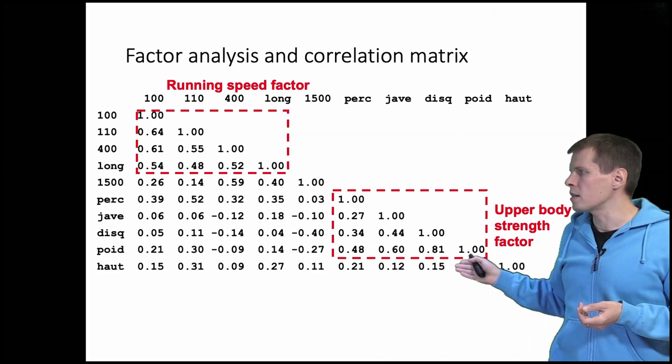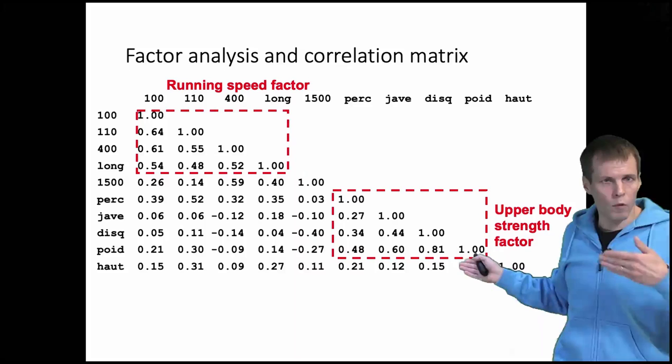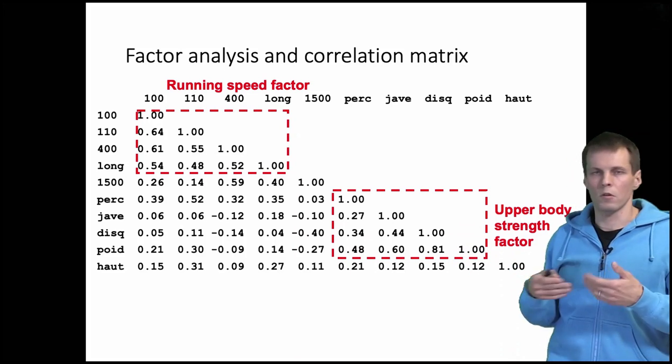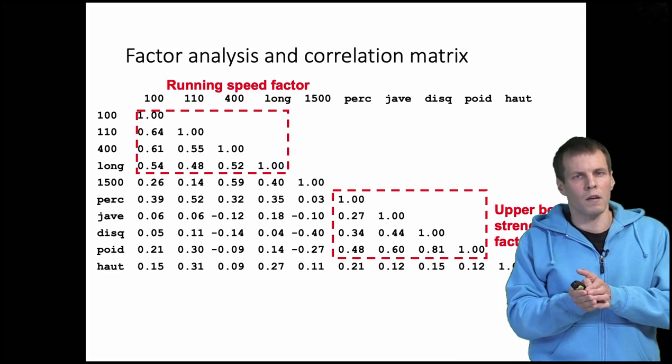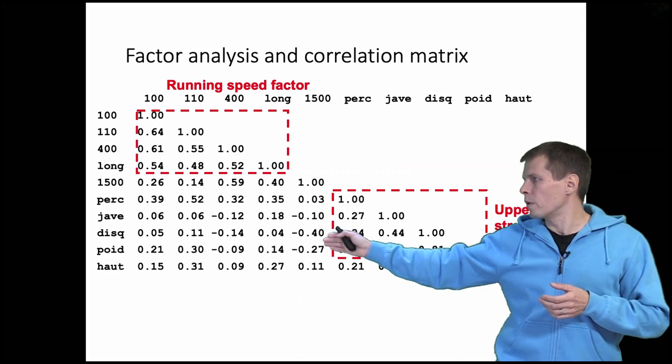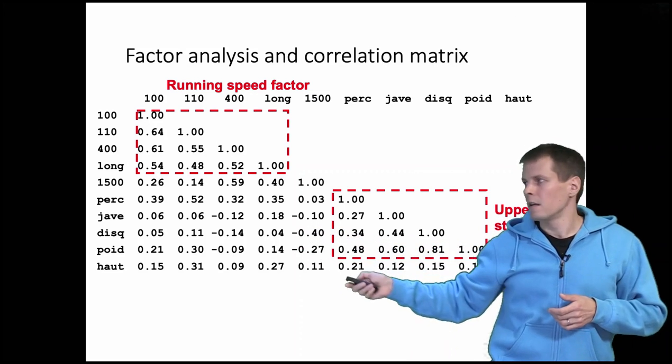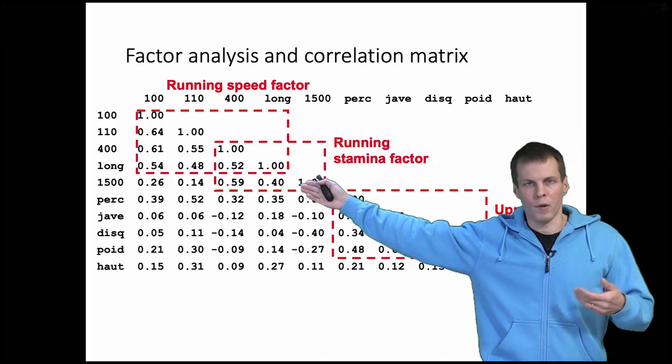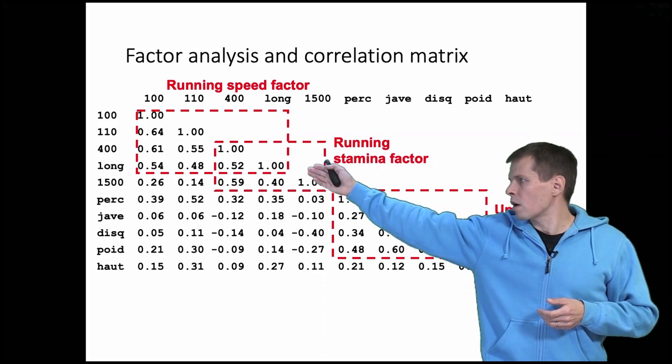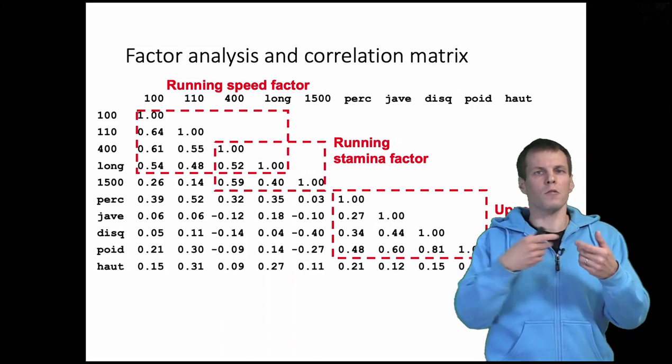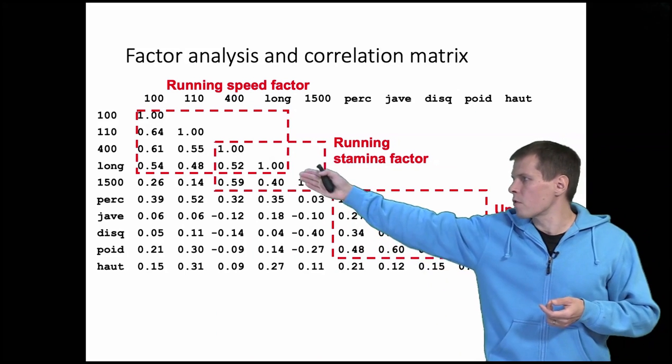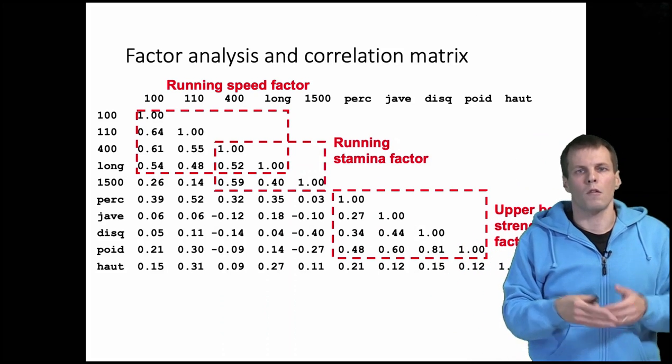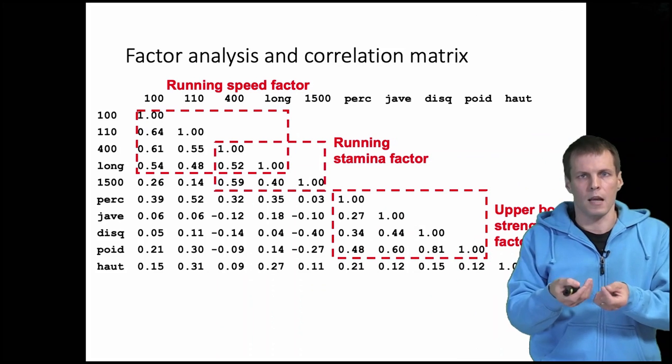Then we have the upper body strength factor here. All the throwing sports belong here, so they are correlated highly with one another and less with the running sport items. Then we have the running stamina factor. We have 1500 meter run here, we have the 400 meter run here which are correlated because they require stamina. For some reason long jump is here, maybe the athletes that are good in long jumping are also good at these stamina sports.